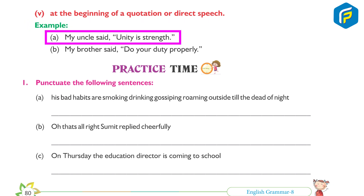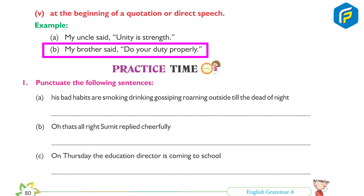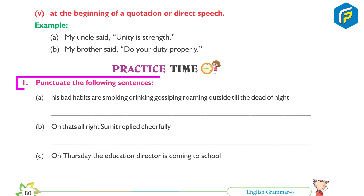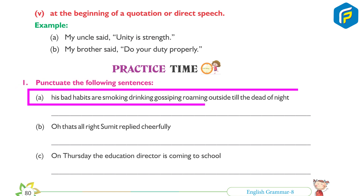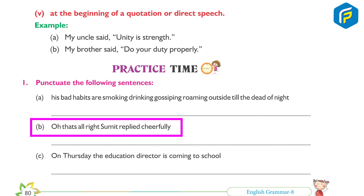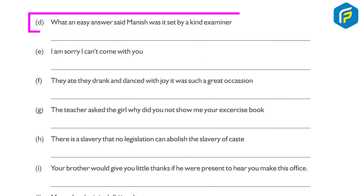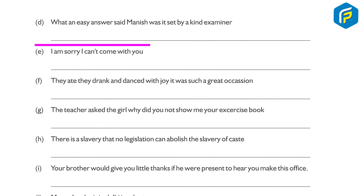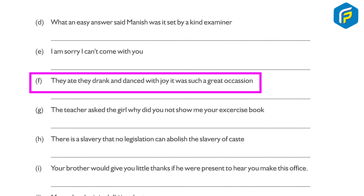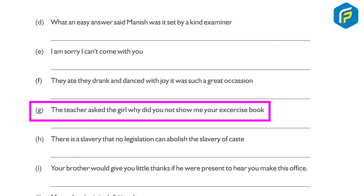Example: My uncle said, 'Unity is strength.' My brother said, 'Do your duty properly.' Practice time — Punctuate the following sentences: A — His bad habits are smoking, drinking, gossiping, roaming outside till the dead of night. B — 'Oh, that's all right,' Samit replied cheerfully. C — On Thursday, the education director is coming to school. D — 'What an easy answer!' said Manish. 'Was it said by a kind examiner?' E — I am sorry, I can't come with you. F — They ate, drank, and danced with joy; it was such a great occasion.